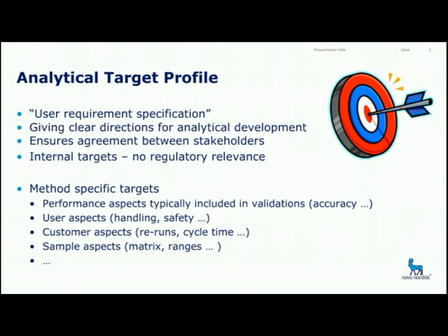We have different types of targets here. We have targets related to the performance of the method, which you typically find in the validation, such as accuracy, linearity, limit of quantitation, etc. But we also have user aspects, like handling and safety. We have customer aspects, like number of reruns that can be tolerated, shelf-care times, and so on. And we have sample aspects, like which matrices we may encounter and what ranges we are analyzing.